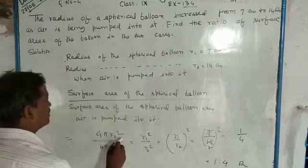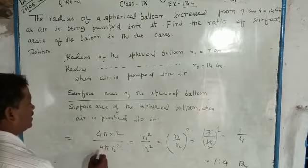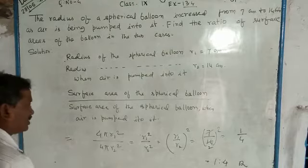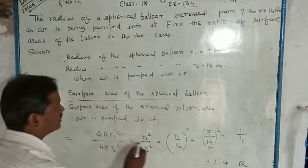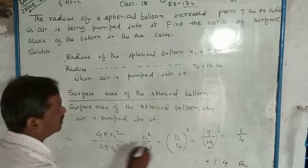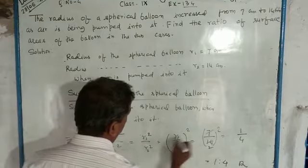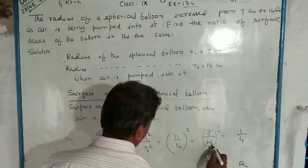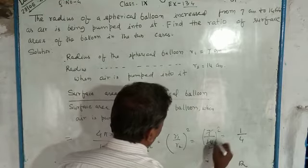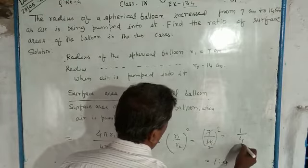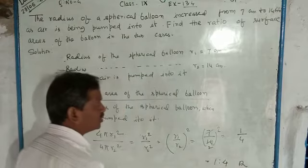Formula is 4πr². The 4s cancel, the πs cancel, leaving r1² over r2². The ratio is 1 to 4.